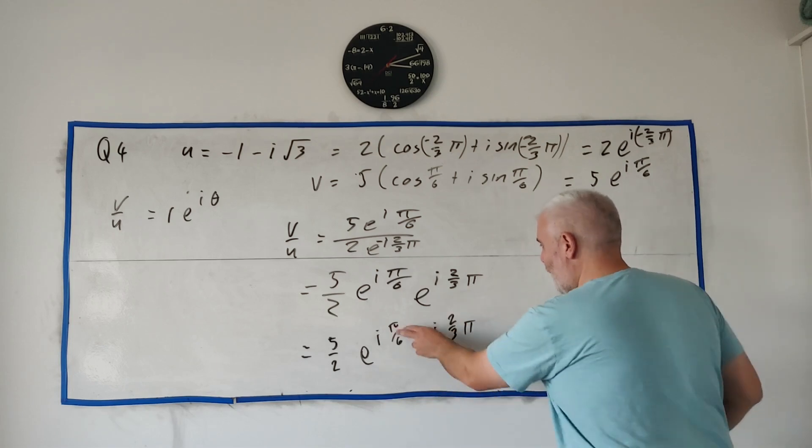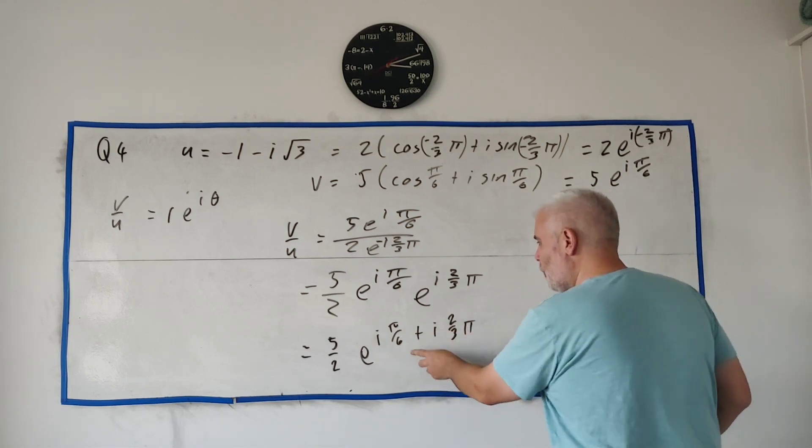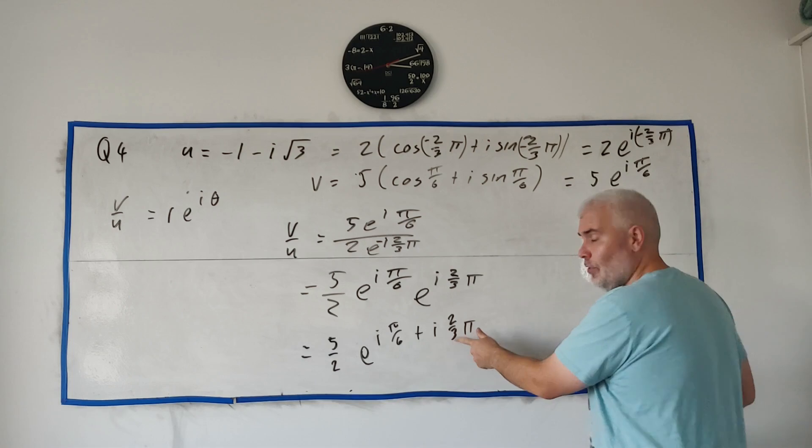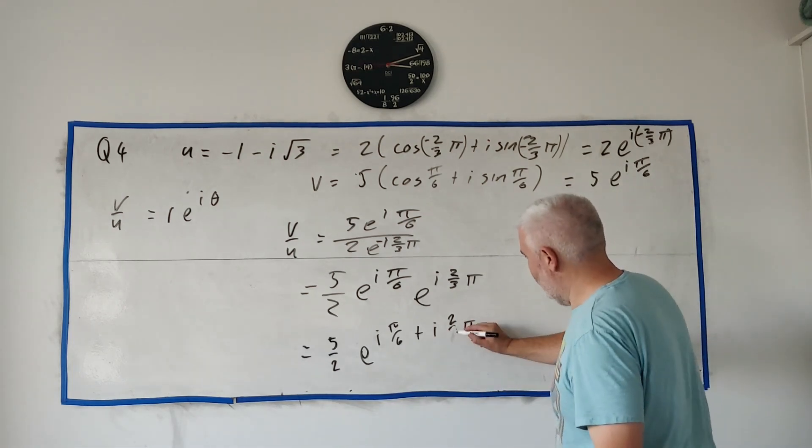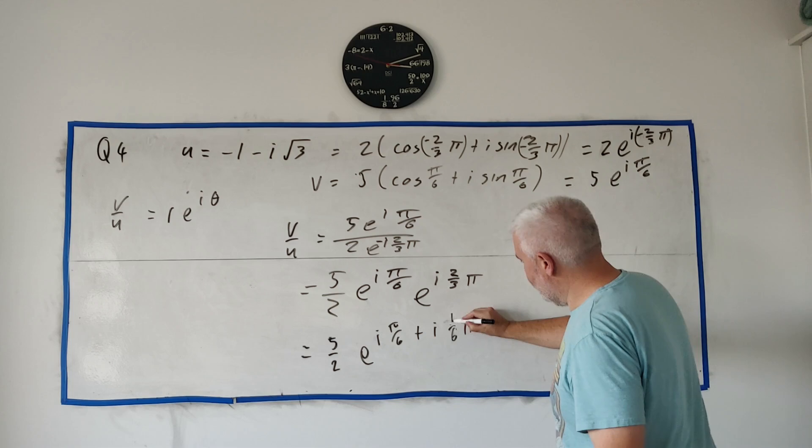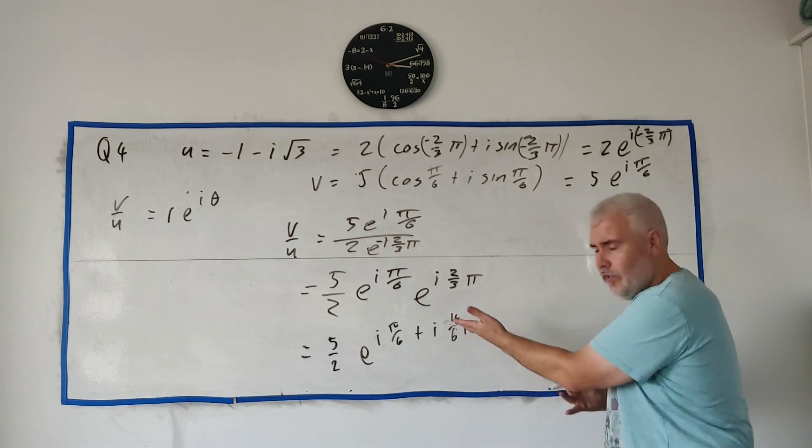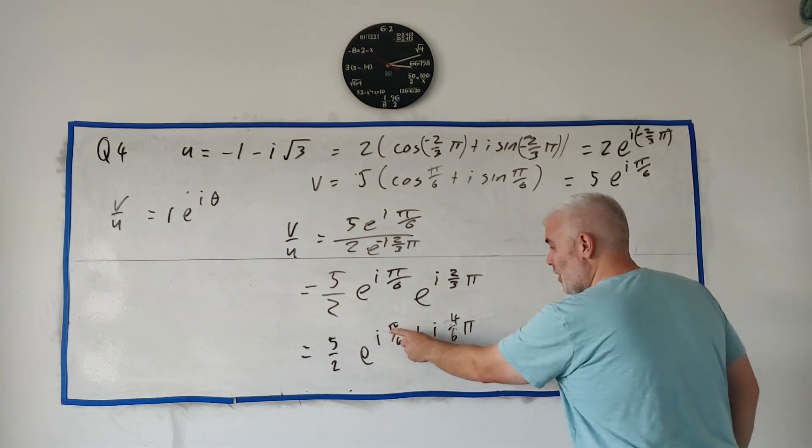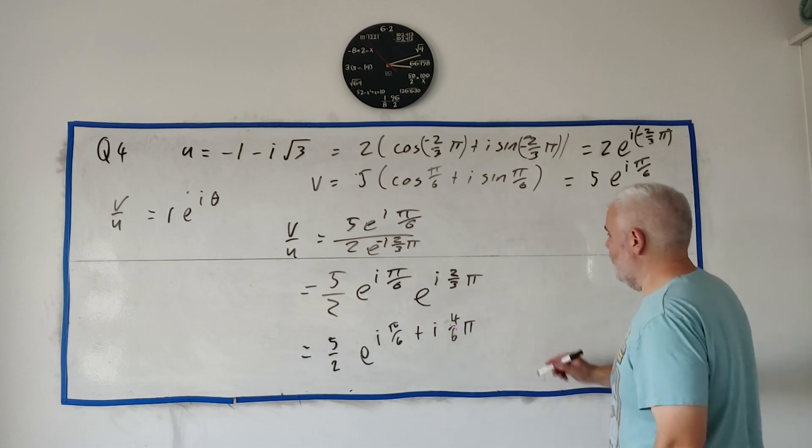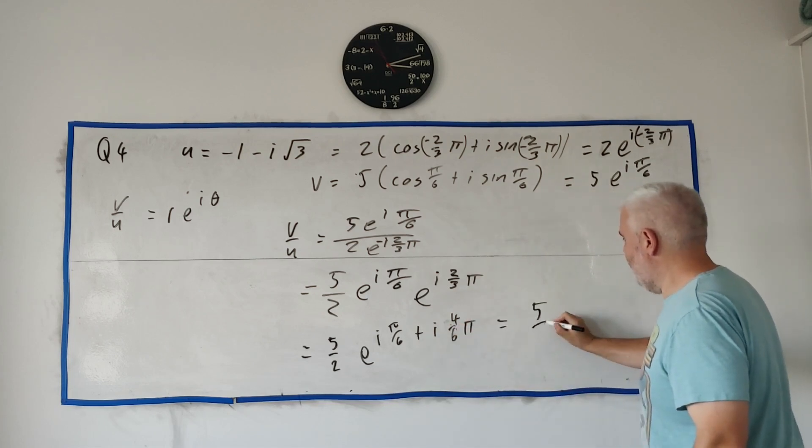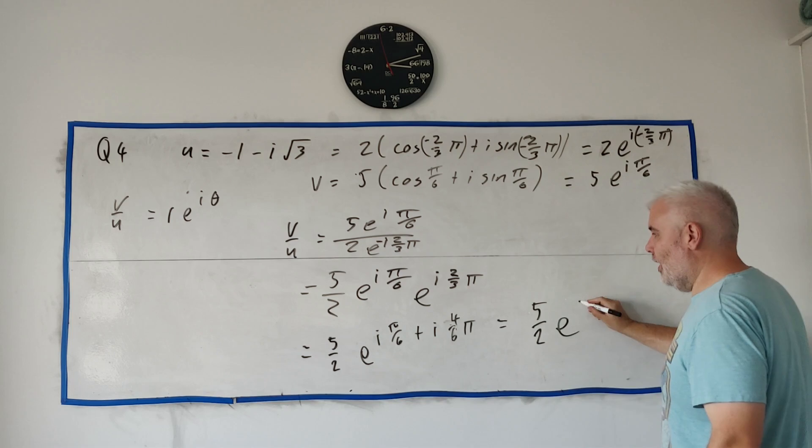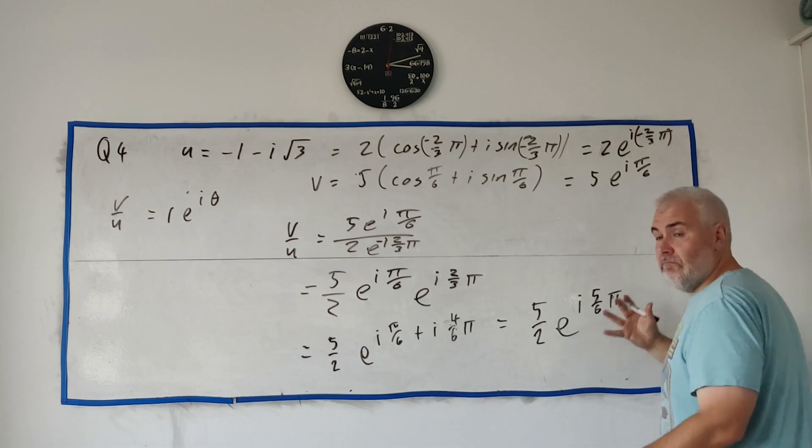These both have a pi in them. Both have i in them. So really we're just adding one over six plus two over three. Let's change that to four over six. Two over three, four over six, same thing. So really we just have one over six plus four over six. So the final answer is just five over two e to the power of i five over six pi. That's it. That's the form they wanted. They wanted an r, a number five over two, e to the power of i, and some angle five over six pi.